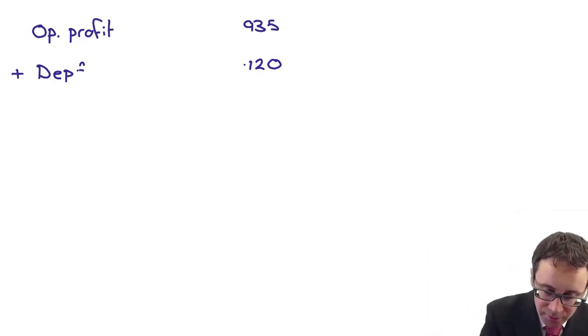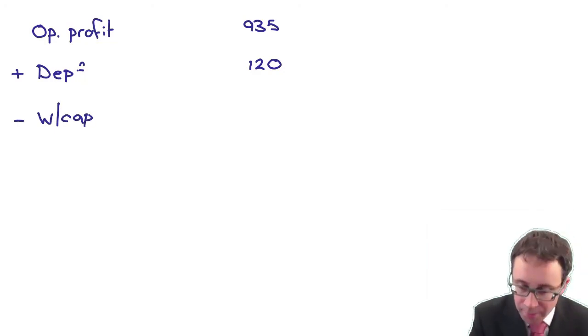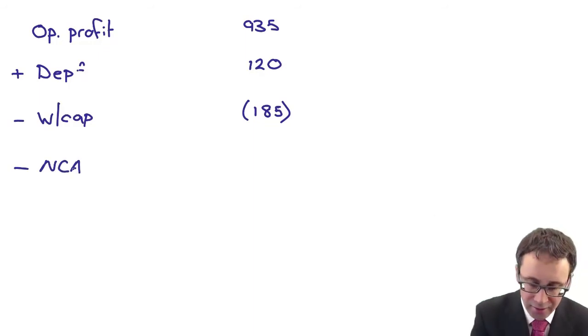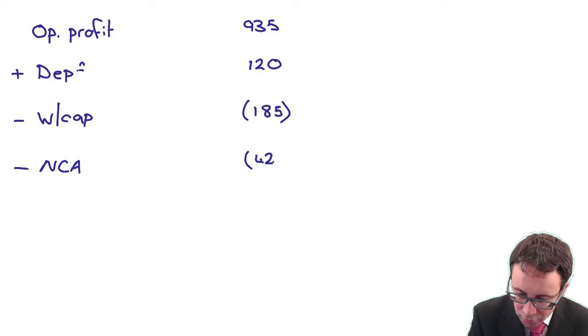You've then got your investments. So we then have to deduct our working capital investment, is that the 185. You've then got your investments in your non-current assets, so effectively your property, plant and equipment - that investment there at 420.